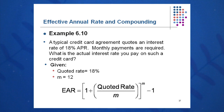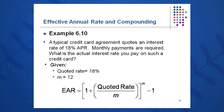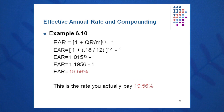Credit card companies may charge 18% APR with monthly payments required, compounded monthly. What's the actual interest rate you'll be paying? The quoted rate is 0.18 and m equals 12. Calculate EAR: 1 plus 0.18 over 12, to the 12th power, minus 1, giving an effective annual rate of 19.56%. So you're actually paying almost 20% on what looks like an 18% credit card.